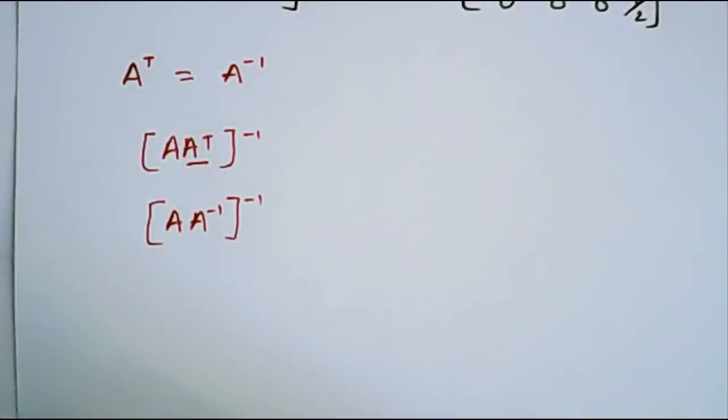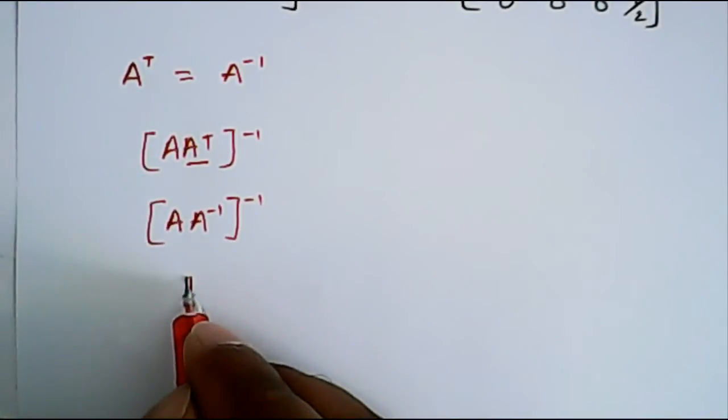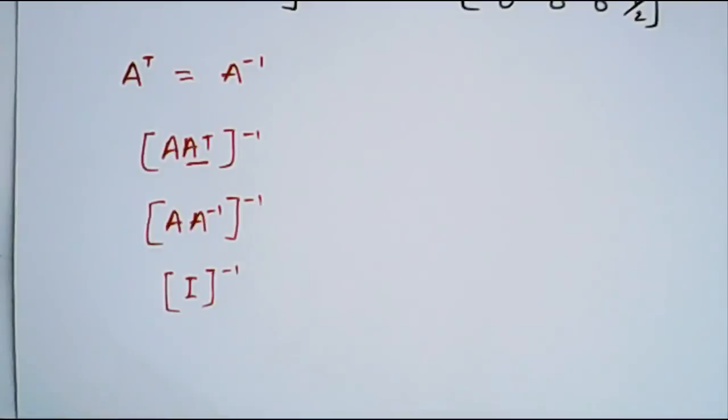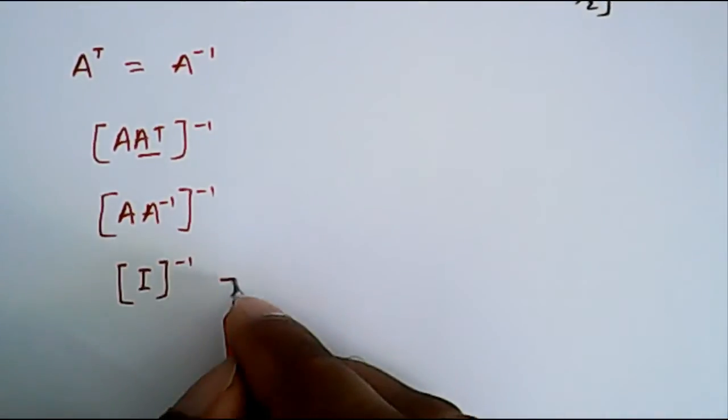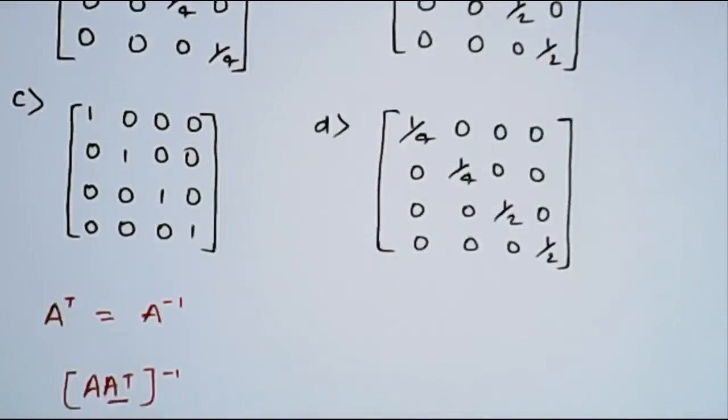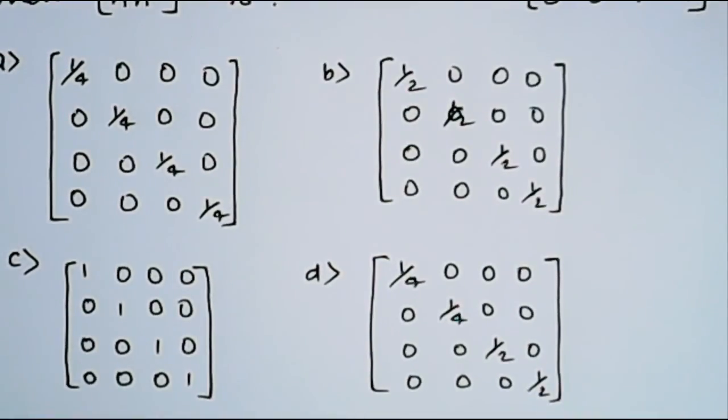Now this is A into A^(-1), because this is A inverse, what it will become? Identity matrix. And then inverse of identity matrix which will be equal to identity matrix itself. So now from the given four options, which one is the identity matrix? Simply we can say that this one is identity matrix and this is the answer.